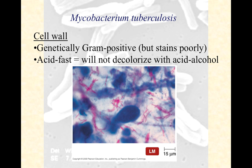Let's talk real quick about that cell wall. Like I said, it's genetically gram positive. You've got a plasma membrane, and then you've got some peptidoglycan — but not much — and then you've got this mycolic acid. And that's about it. So it really doesn't look like a gram negative or a gram positive. It's quite unusual in that way.